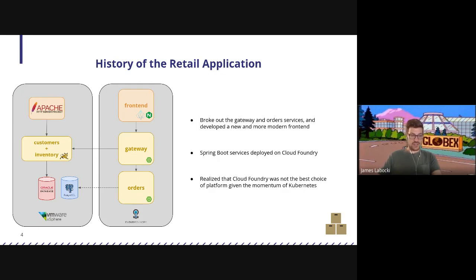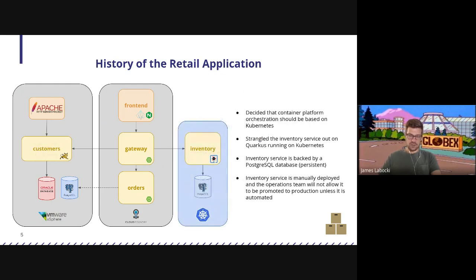We took the inventory service and split it out into a Kubernetes environment. The nice thing is we could bring our database on Kubernetes because Kubernetes could handle persistence. We developed the inventory service using Quarkus. Unfortunately, the big challenge with our Kubernetes environment is that we've manually deployed this inventory service. Our development teams have just developed it with a manual way of deploying it. In order to promote this into our production Kubernetes clusters, we're going to have to re-platform it and automate the way we do this. They're really trying to embrace a GitOps method for our development.